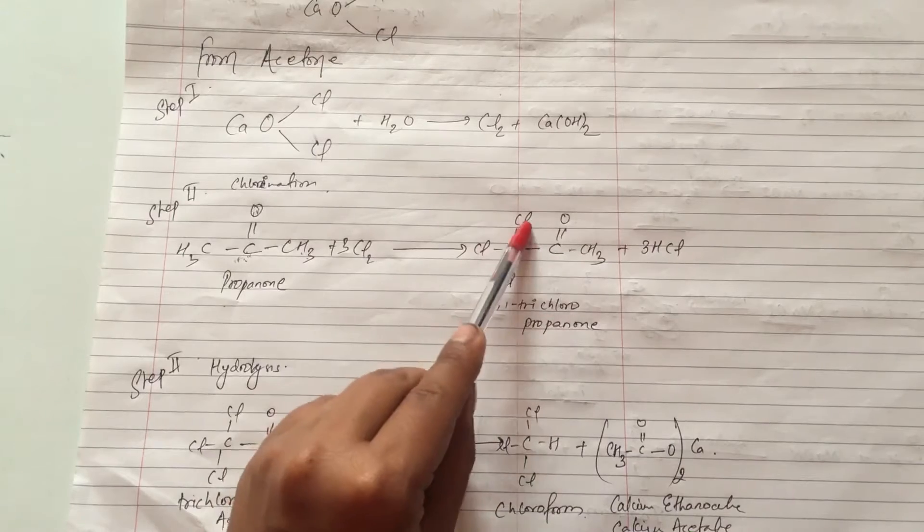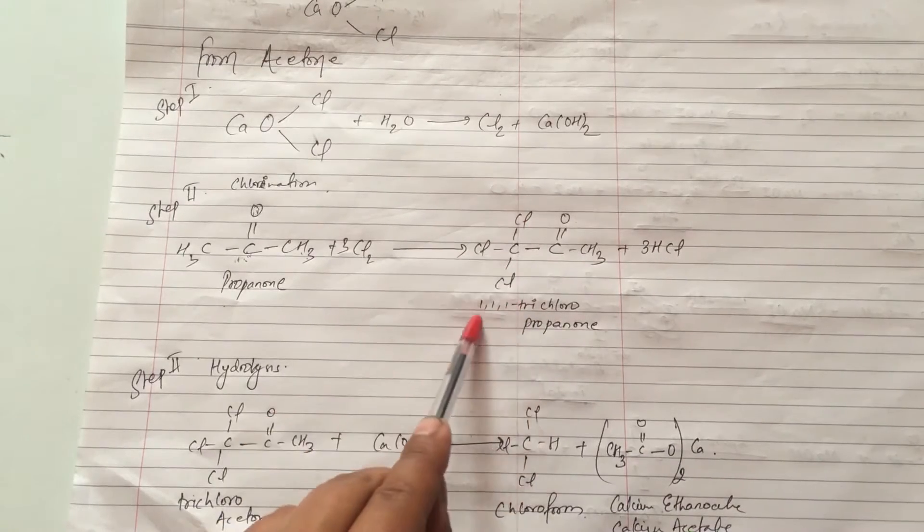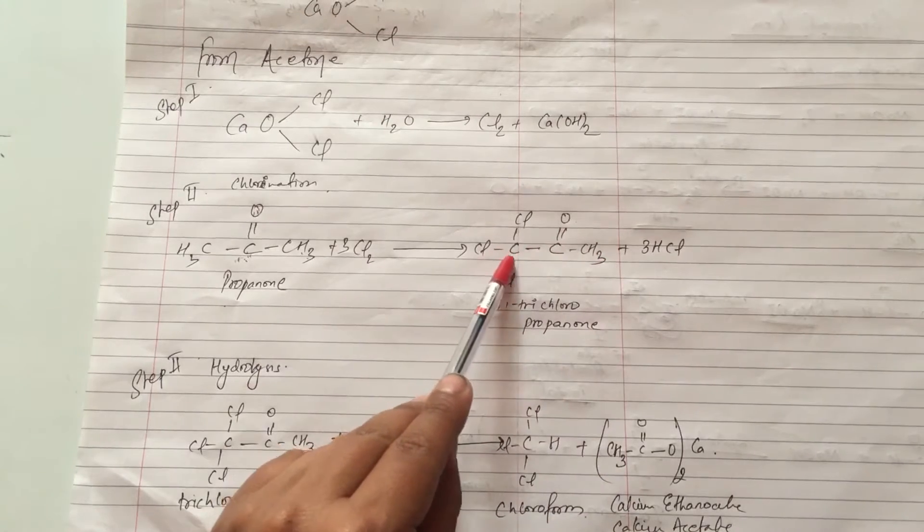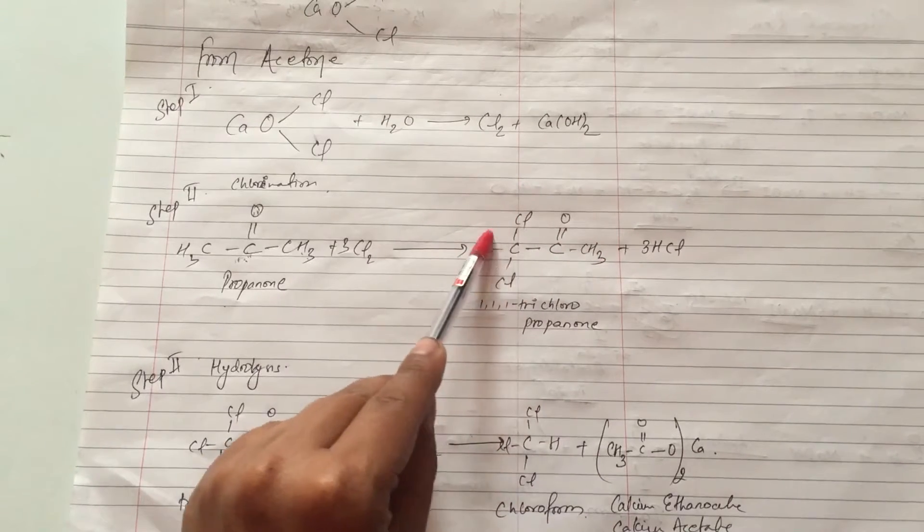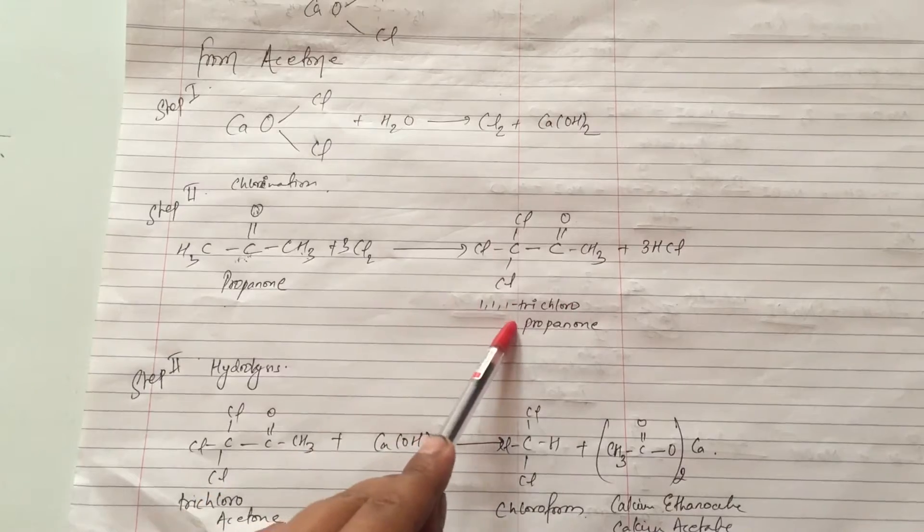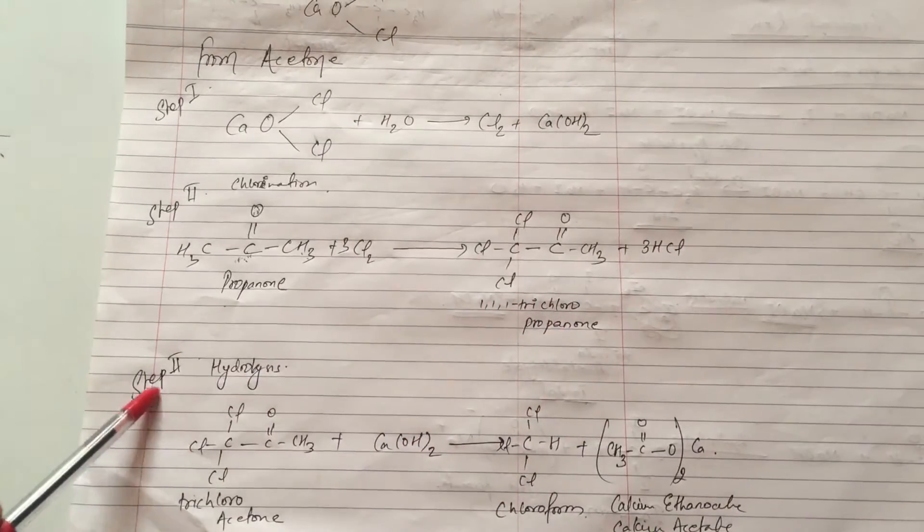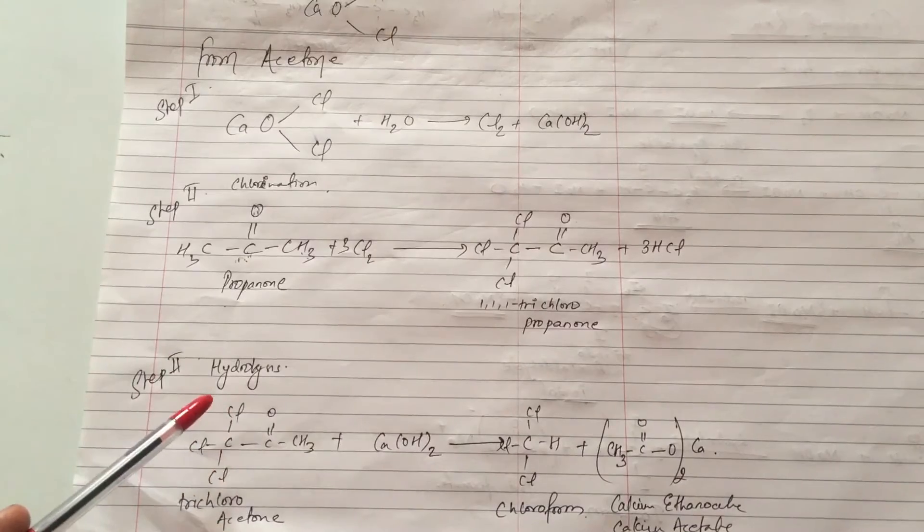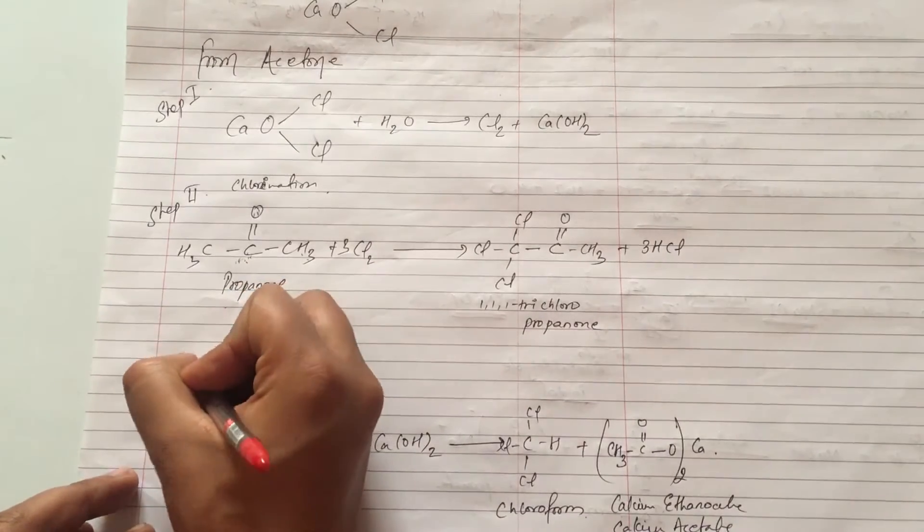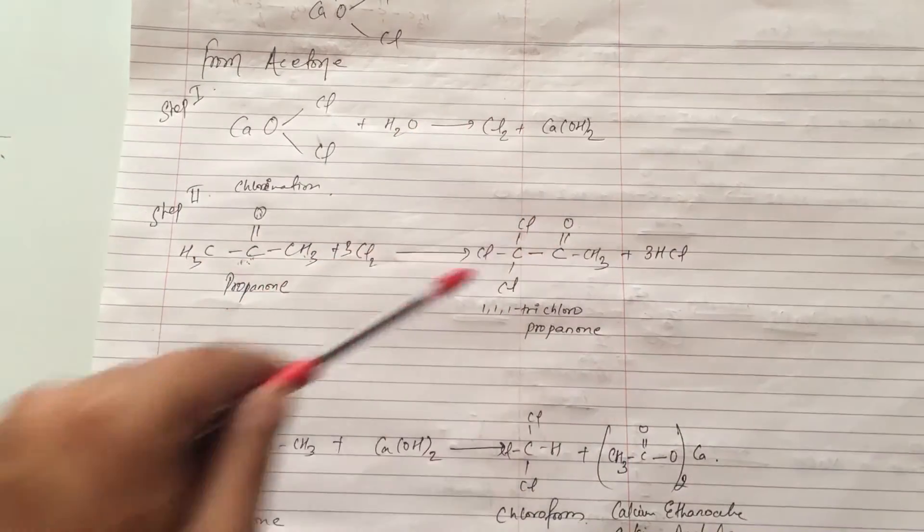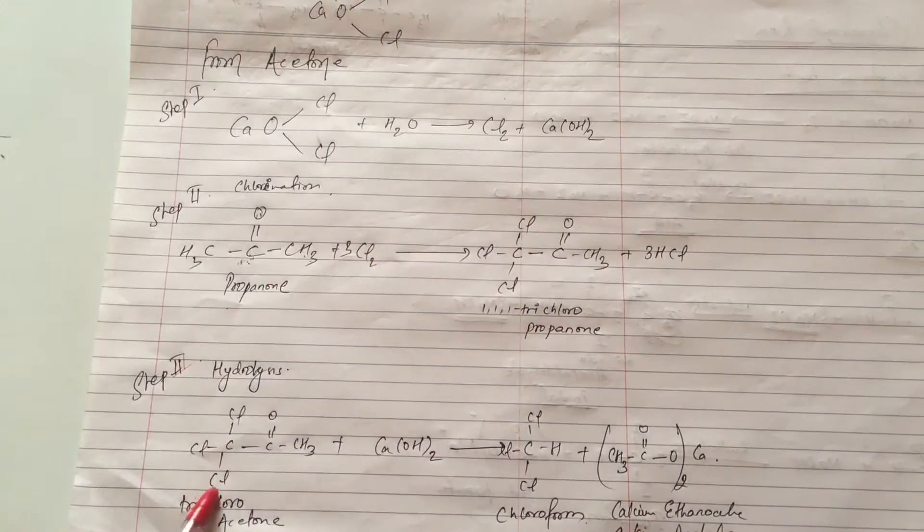1,1,1 trichloro propanone forms with chlorine at the 1,1,1 position. Ultimately 1,1,1 trichloropropanone is in the third step. The third step is to make hydrolysis. Hydrolysis is to make CHCl3 and then you can make it with trichloro acid.